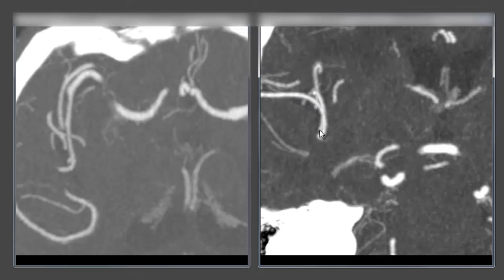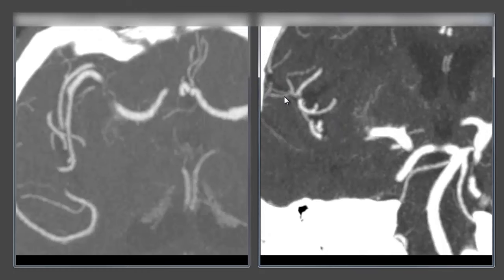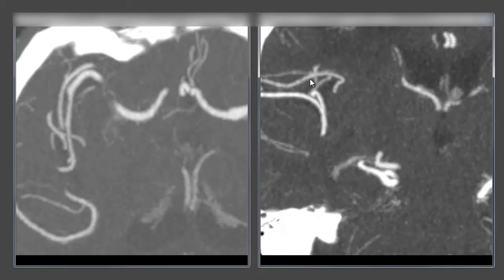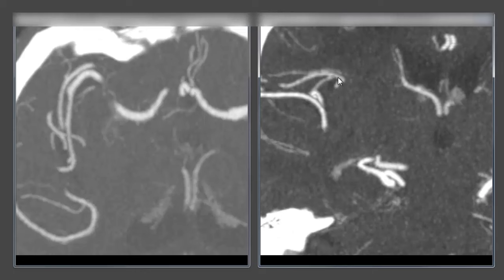Here is a clear example: M2 takes a turn, then M3. These are all M2 branches with smaller M3s, and farther back an M2 branch coming up. Once it takes its turn and moves medial to lateral, we're in M3. Once you hit the cortical surface, those vessels visible on the cortical surface are all M4.